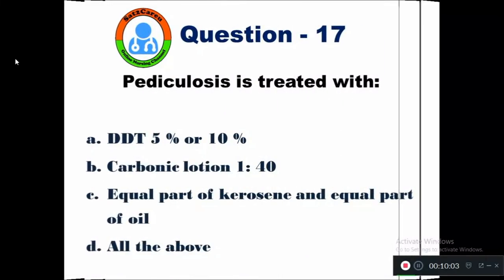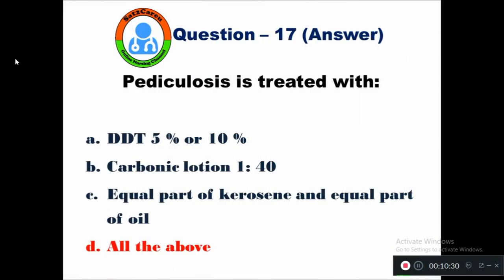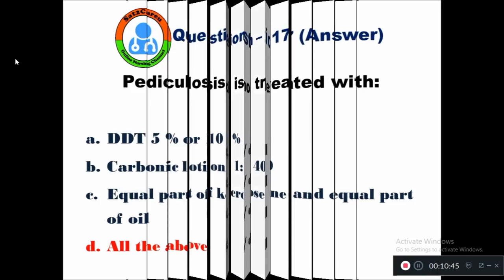Question 17: Pediculosis is treated with — option A DDT 5% or 10%, B carbolic lotion 1:40 ratio, C equal parts of kerosene and oil, D all the above. Pediculosis is treated with all of the above: DDT 5% or 10%, carbolic lotion 1:40, and equal parts of kerosene and oil. All three are used to treat pediculosis.